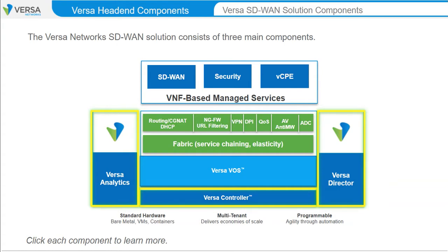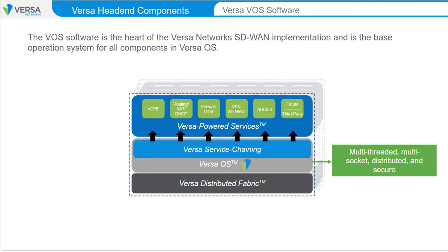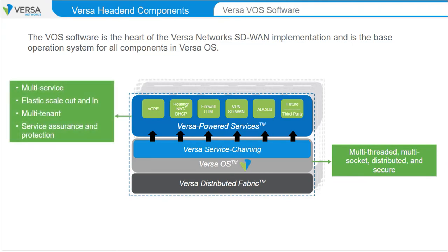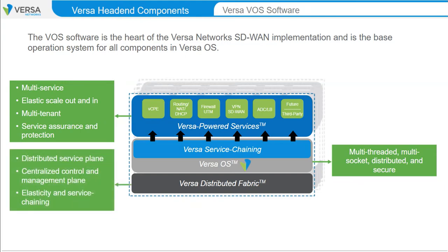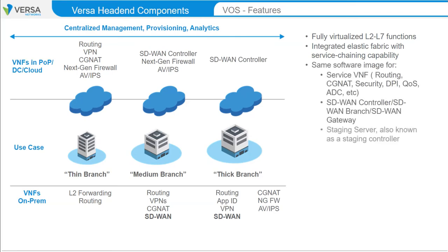VOS Software is the heart of the Versa Networks SD-WAN implementation. It is the base software platform on Versa Controller and Versa CPE devices, and provides a full suite of SD-WAN, routing, security, and traffic monitoring functions, including SLA monitoring and multi-tenant support. VOS is a software component that offers fully virtualized Layer 2 to Layer 7 functions with service chaining capabilities. The same software is used for all of the SD-WAN functions in the environment.